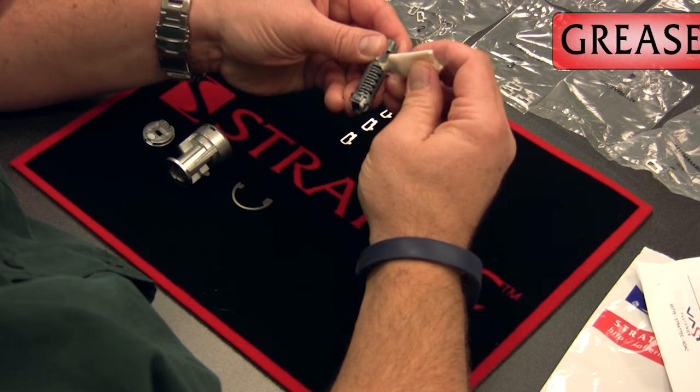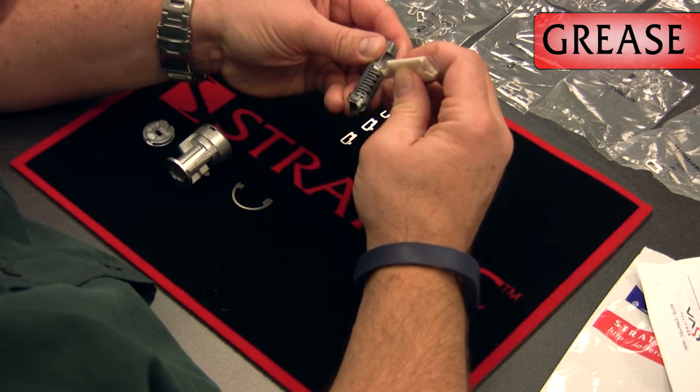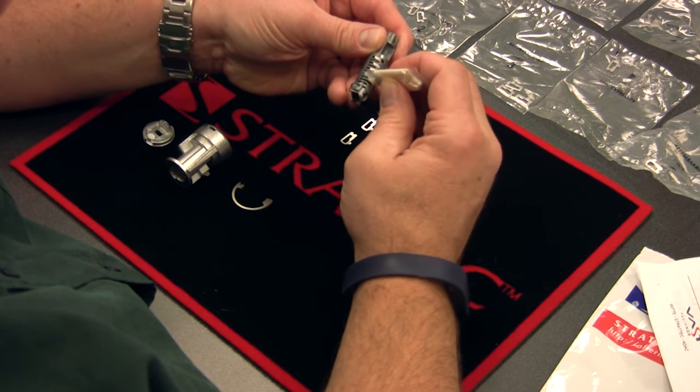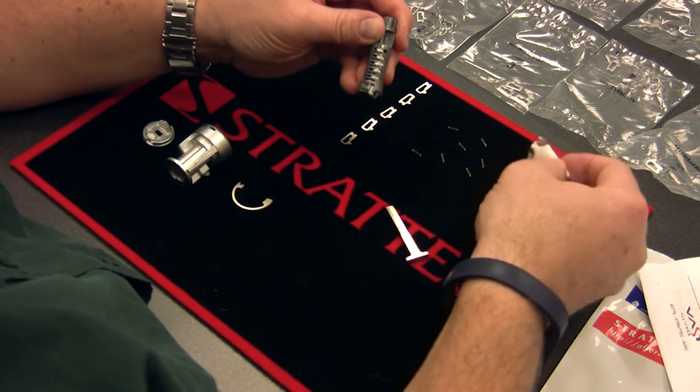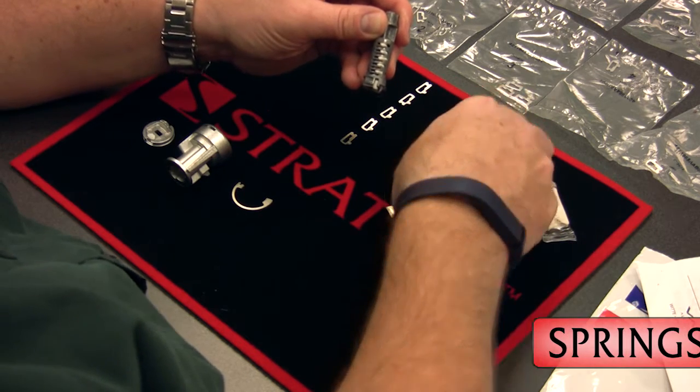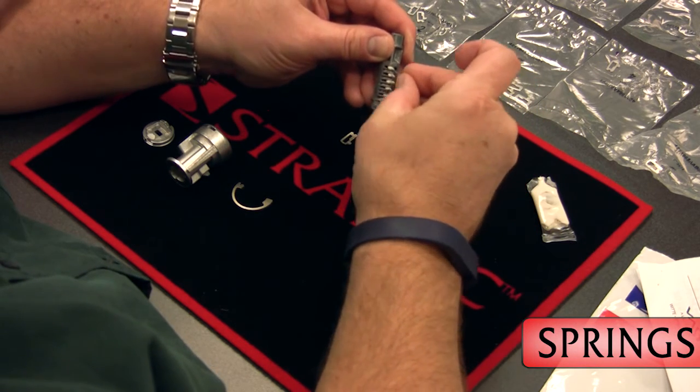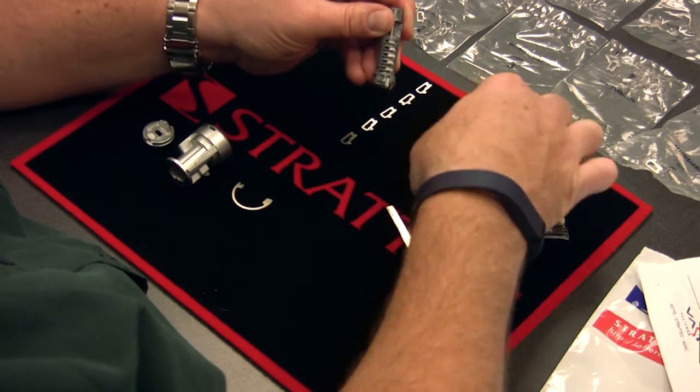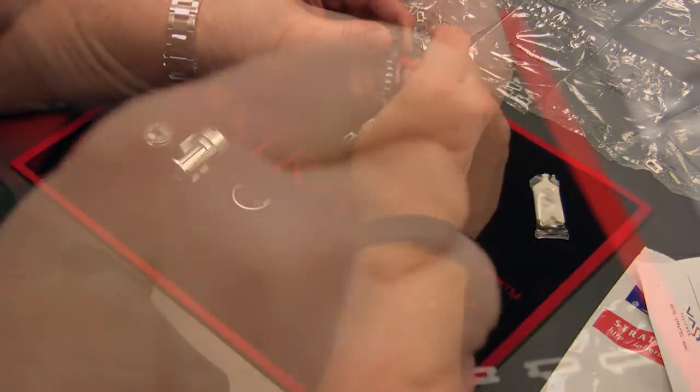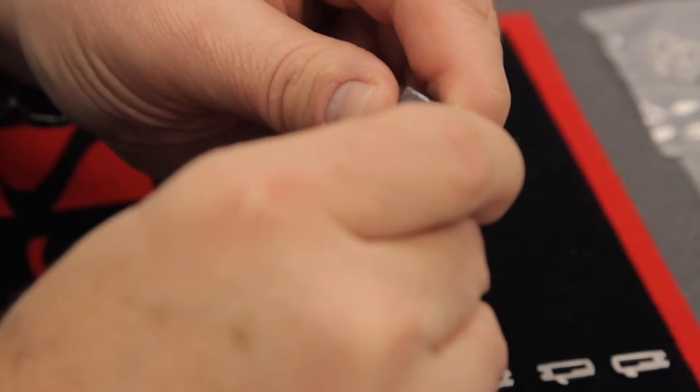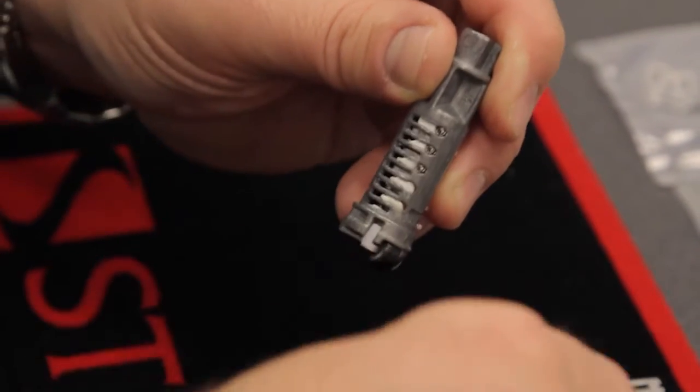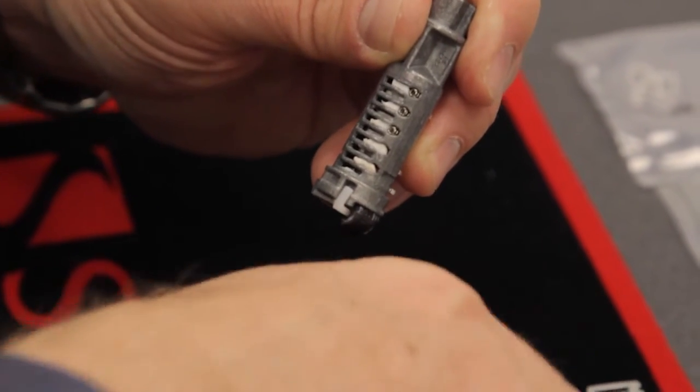So I'm just going to quick get some grease in there in each ward. And then we'll insert the tumbler springs.